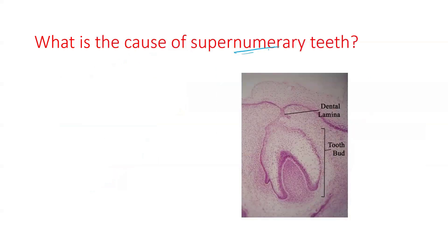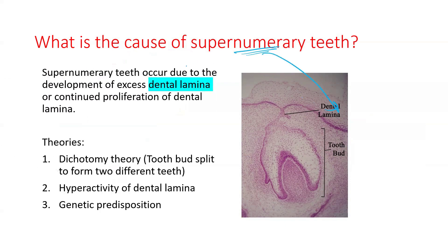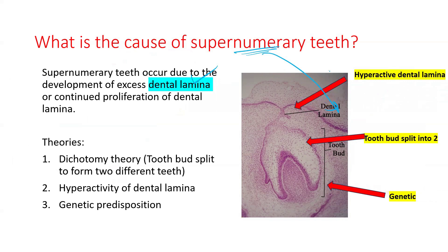The cause of the supernumerary tooth is blamed on the dental lamina — specifically, excess and continued proliferation of the dental lamina. There are three theories related to it: number one is the hyperactivity of the dental lamina; number two is where one tooth bud splits into a normal tooth and a supplementary tooth; and the third is the genetic theory.